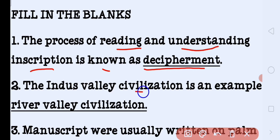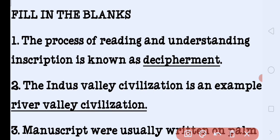The Indus Valley Civilization is an example of river valley civilization, because the Indus Valley civilization developed near the Indus River. That is why it is known as a river valley civilization.